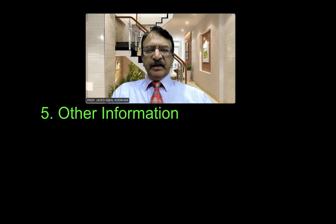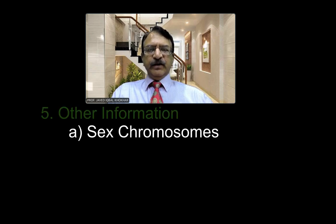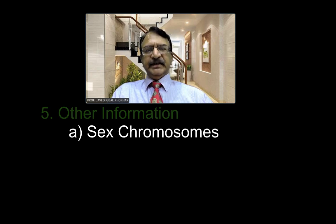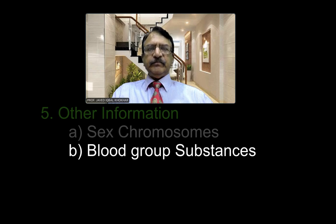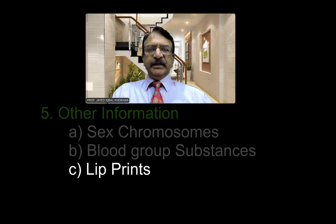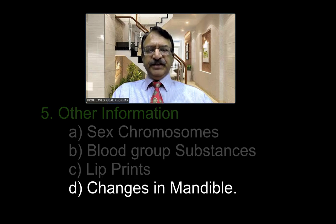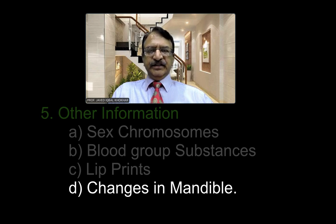Other information which we get from teeth includes: we can find out the sex from the sex chromosomes in the root of the teeth; then blood group substances can also be determined; then lip prints also help; and finally, changes in the mandible regarding teeth — what are the changes in the mandible which help in determination of age.